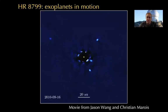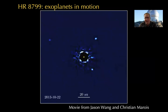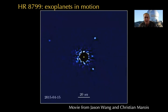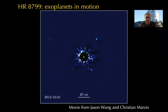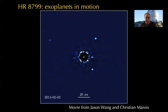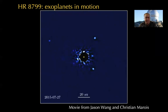I always like to start these talks with this wonderful movie from Jason Wang and Hashem, showing about 10 years of data as the HR 8799 planets orbit their young star. Since we're talking about young planets this week, a lot of this talk is going to be focused on direct imaging, and these powerful images that direct imaging gives us — watching the planets go about their orbits over about 10 years, obeying Kepler's laws.